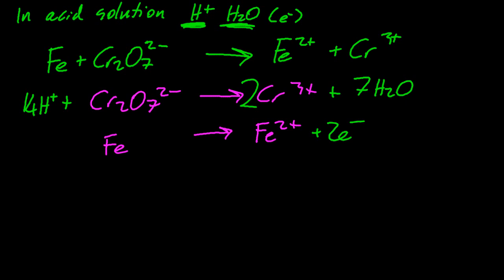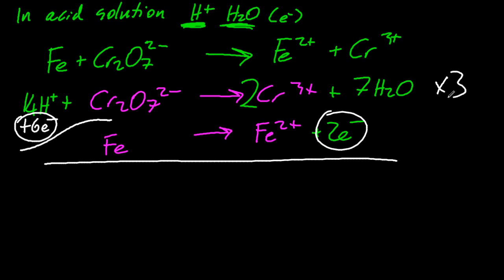Charge on the left is 12+, charge on the right is 6+, for the top equation. So if I add 6 electrons up, now I've balanced the top equation, in terms of the atoms and the charge.